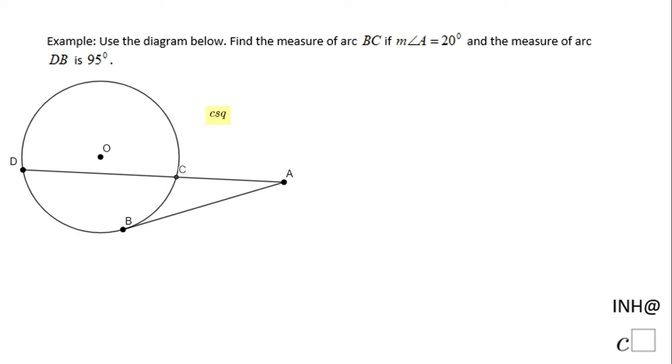Welcome or welcome back. But I need help at C square. In this example we have this diagram and we need to find the measure of arc BC, which is this arc here, if the measure of angle A, this angle here, is 20 degrees and the measure of arc DB, which is this arc, is 95 degrees.